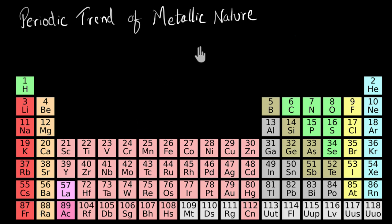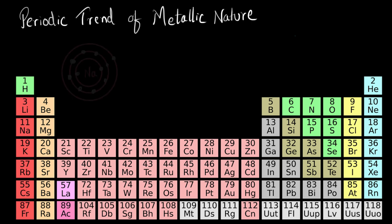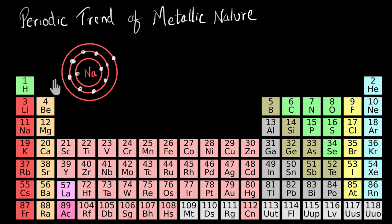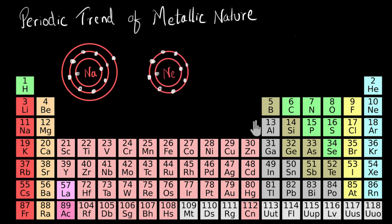If you're wondering what metallic nature is, a metal is an element that can easily give away its outermost electron. For example, sodium is a very good metal. It has one electron in its valence shell and will participate in chemical reactions to give that away, because by doing so it can attain a complete octet, just like the nearest noble gas, neon, and therefore become more stable. So metals like to give away their valence electrons. If an element can easily give away its outermost electron, it is more metallic in nature.